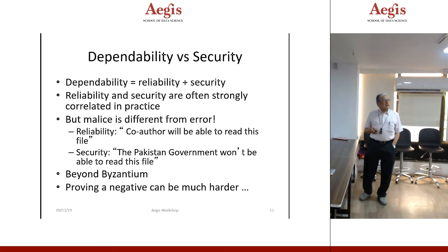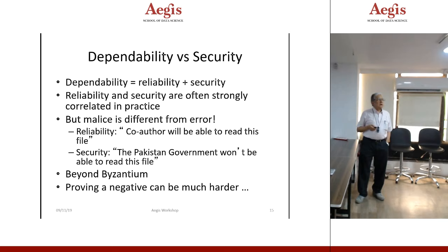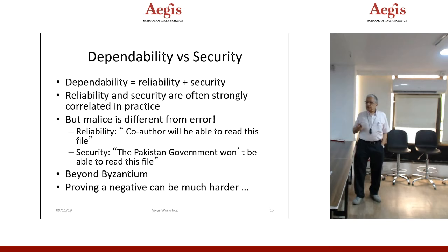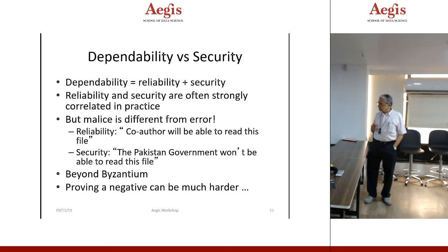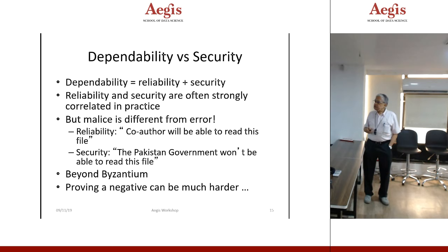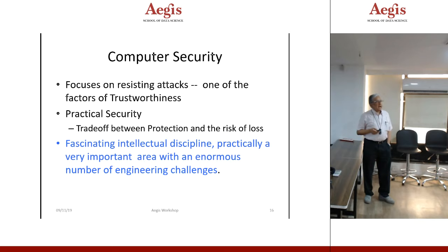Trust in a system means it should exhibit all functionality users expect, not exhibit unexpected functionality, and be accompanied by a compelling basis for believing so — despite failures of system components, attacks, operator errors, and inevitable design and implementation flaws. Dependability is reliability plus security. Reliability and security are often strongly correlated in practice, but malicious behavior is different from error. For example, in reliability: a co-author will be able to read this file. In the security case: the Pakistani government won't be able to read this file. Proving a negative is much harder. Practical security is a trade-off between protection and the risk of loss — a fascinating intellectual discipline with enormous engineering challenges.